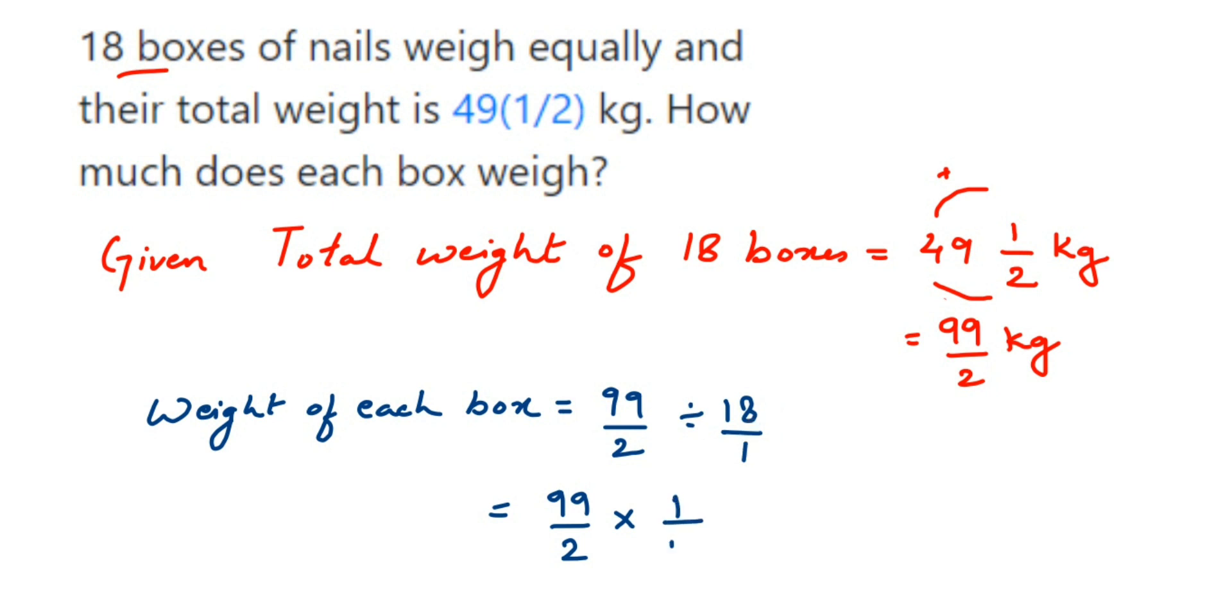Now try to cancel the numbers if possible. If not, just multiply and write down the answer. But here I can cancel them. So when you're canceling the numbers, make sure that you cancel the number in the numerator and denominator. Like I can cancel 18 and 99 here, like in the 9 table: 9 twos are 18, and here 9 elevens are 99.